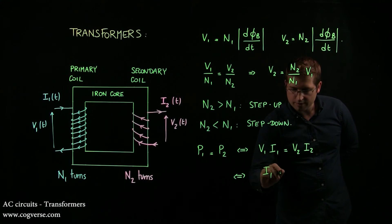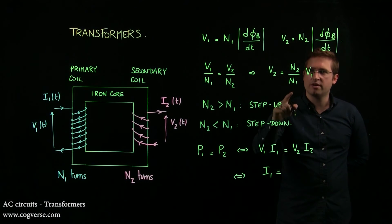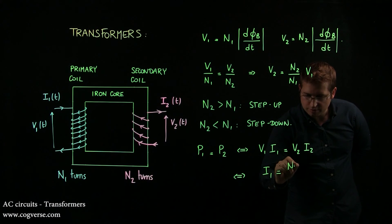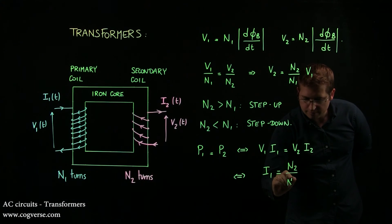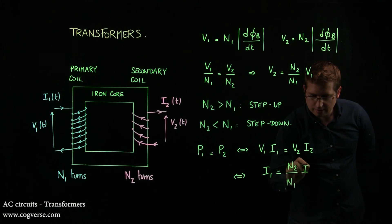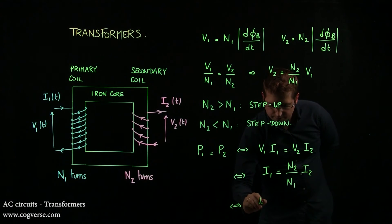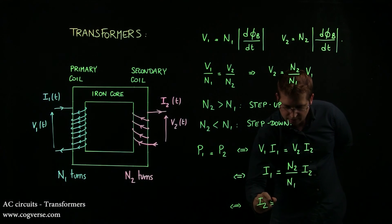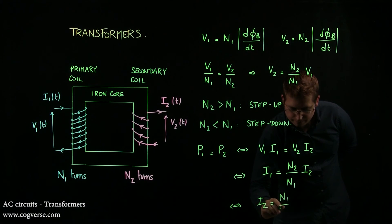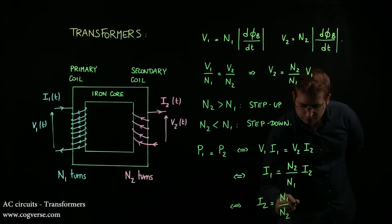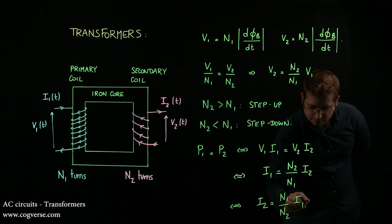So we have I1 is equal to V2 over V1, but that's N2 over N1 times I2. And finally, you get that I2 is equal to N1 over N2 I1.